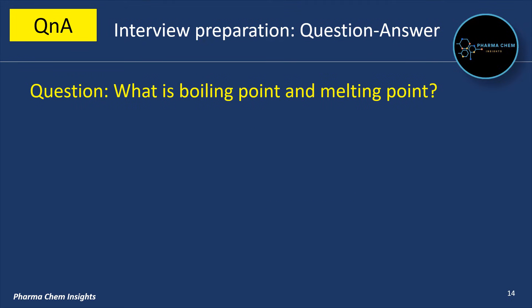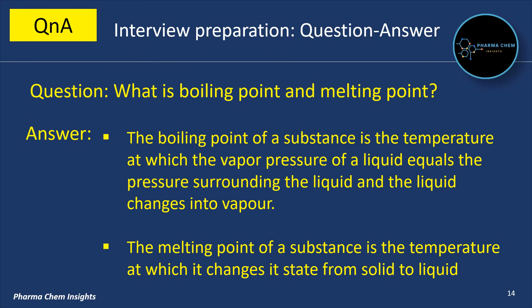What is boiling point and melting point? The boiling point of a substance is the temperature at which the vapour pressure of a liquid equals the pressure surrounding the liquid and the liquid changes into vapour state. The melting point of a substance is the temperature at which it changes its state from solid to liquid.